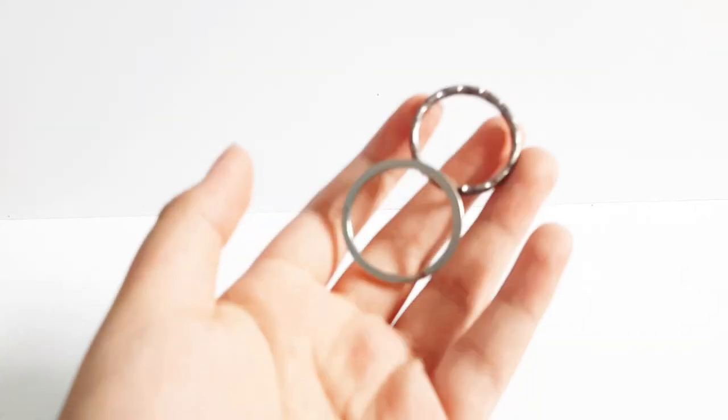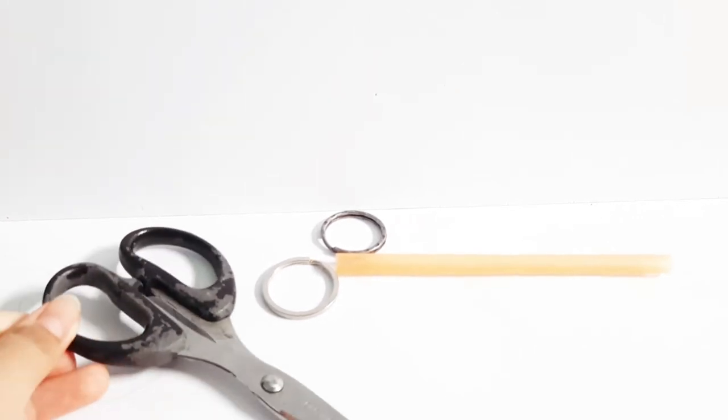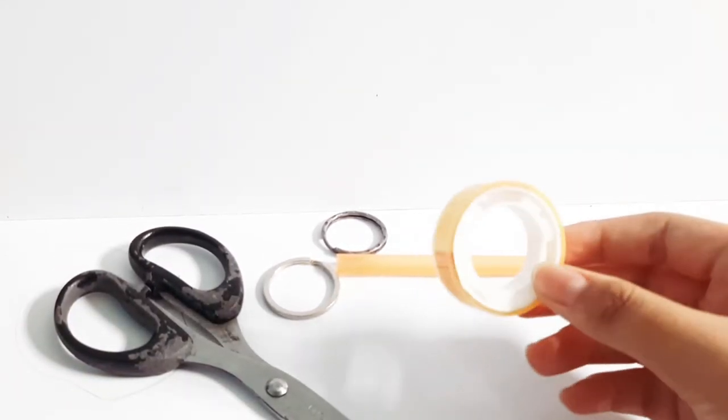The things that you need to make this bike chain are two key rings (you can get this from keys or a keychain), a straw, scissors, and you're also going to be needing some tape. Let's get started.